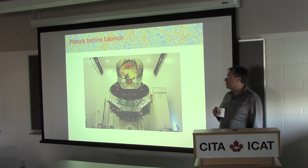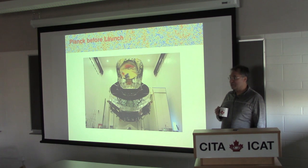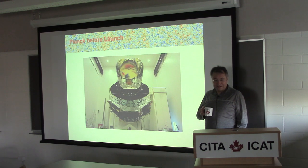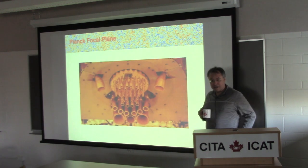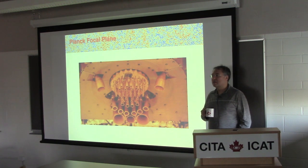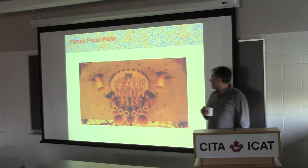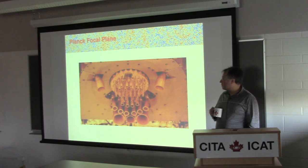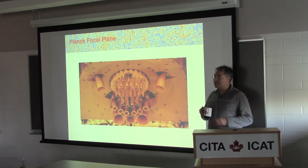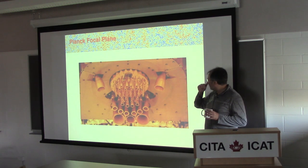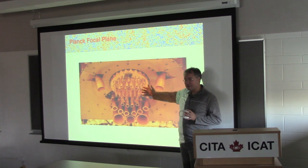We wanted to take a look at how reheating modes would get imprinted into the CMB. Here's the Planck satellite before its launch. It's a space satellite with basically a bunch of detectors in the focal plane - all microwave, partly bolometers, partly radio frequency detectors.